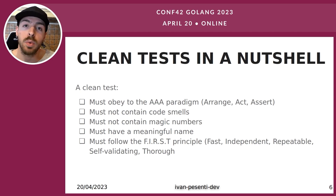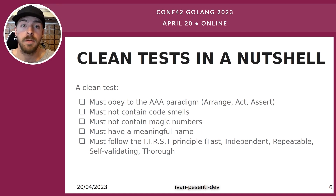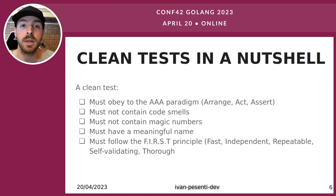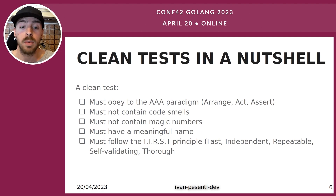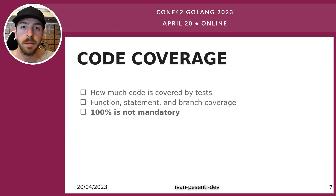The easy fix for magic numbers and strings is to extrapolate those values into constants referenced throughout the program. A test must also have a meaningful name from which you can infer inputs and outputs. Finally, from the TDD manifesto, a clean test should follow the FIRST principle: Fast, Independent, Repeatable, Self-validating, and Timely.